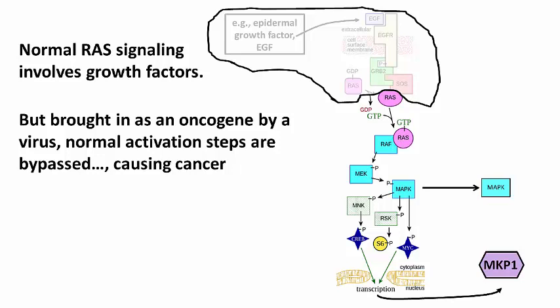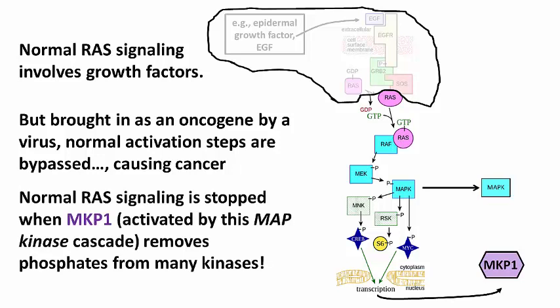Under normal circumstances, excess RAS activity is controlled by the protein MKP1, which stands for MAP-kinase-phosphatase-1. We've already seen the role of a phosphatase in mitigating or terminating a hormone response. This is a gene that is activated as part of a normal mitogenic response, simply to prevent runaway cell divisions.